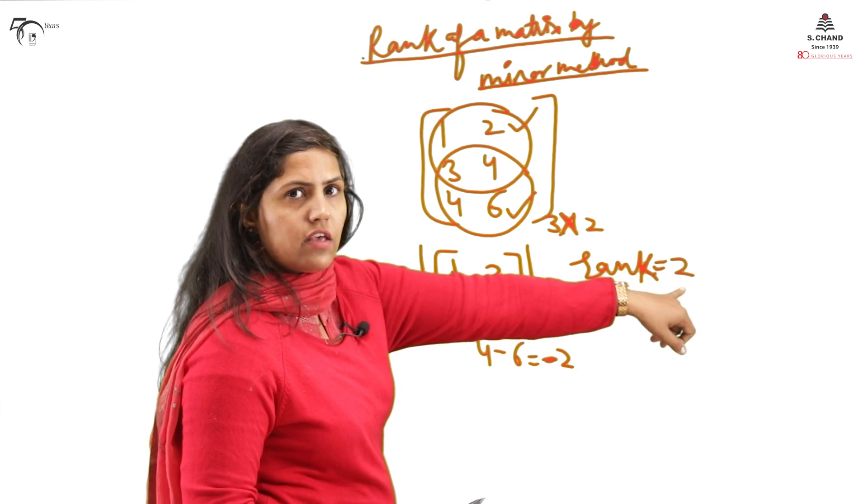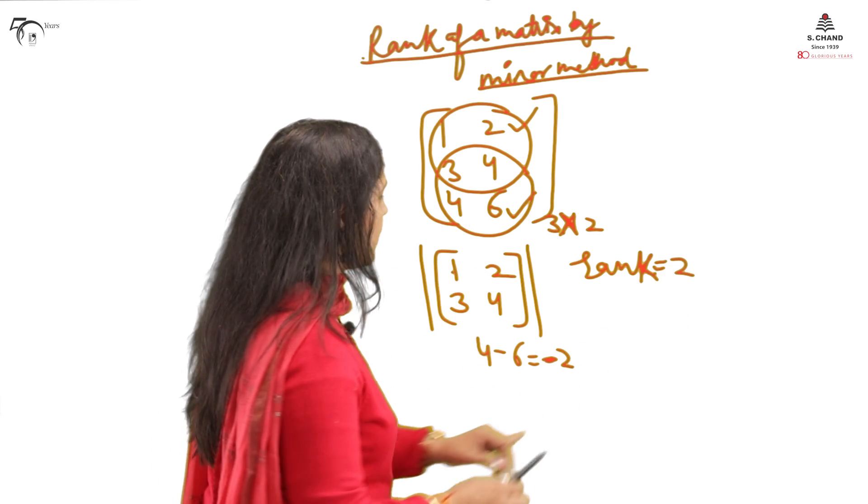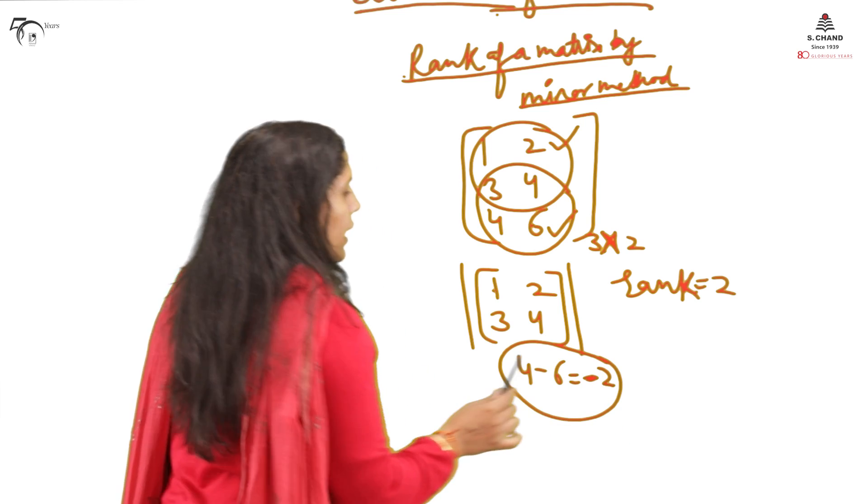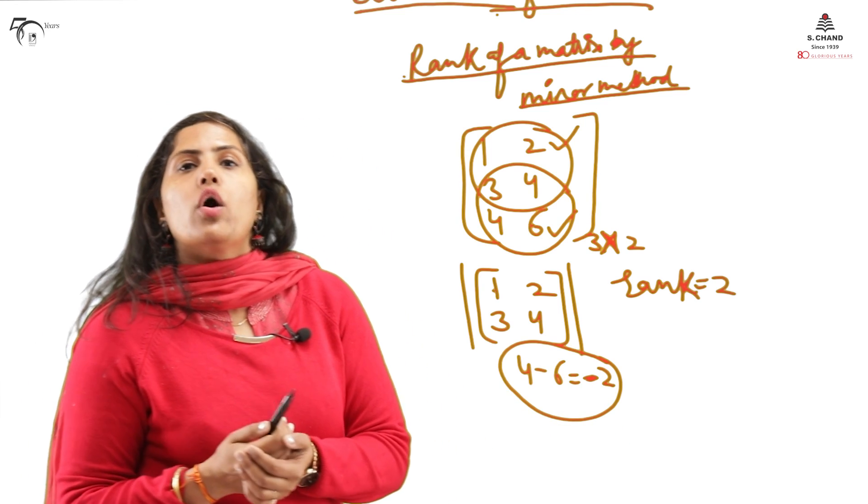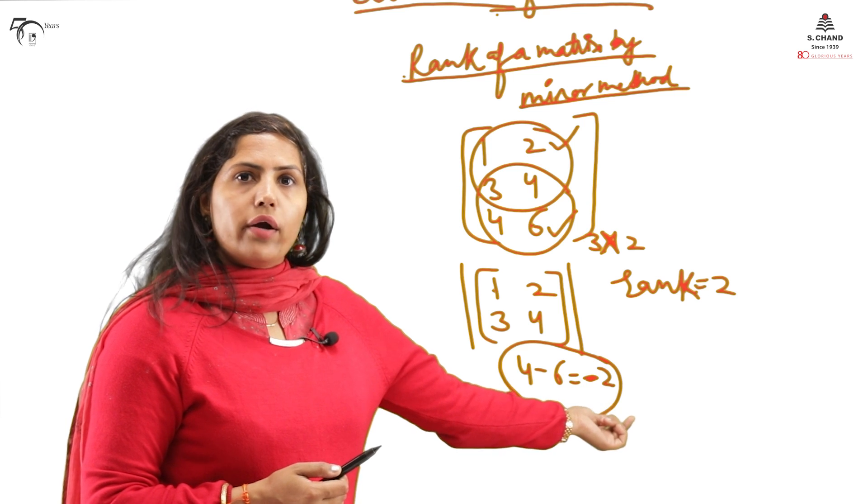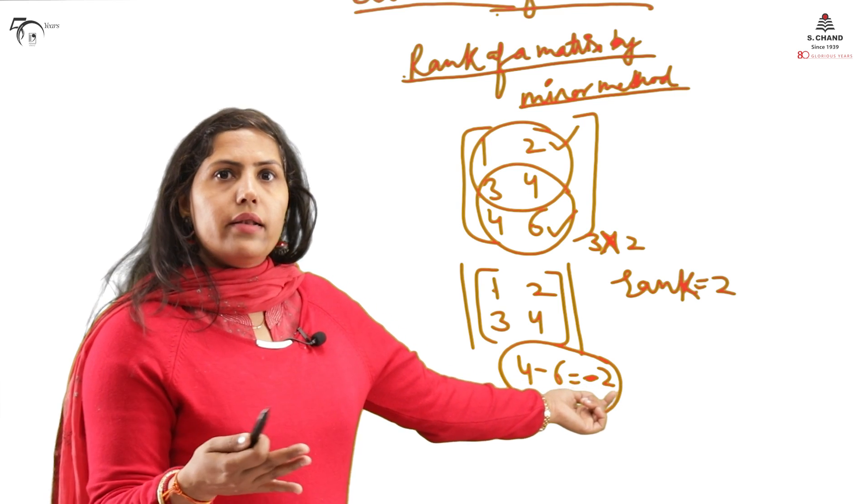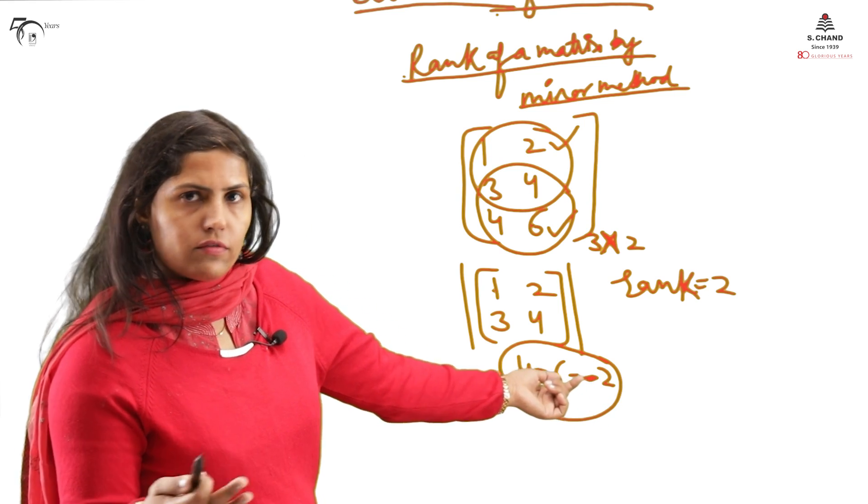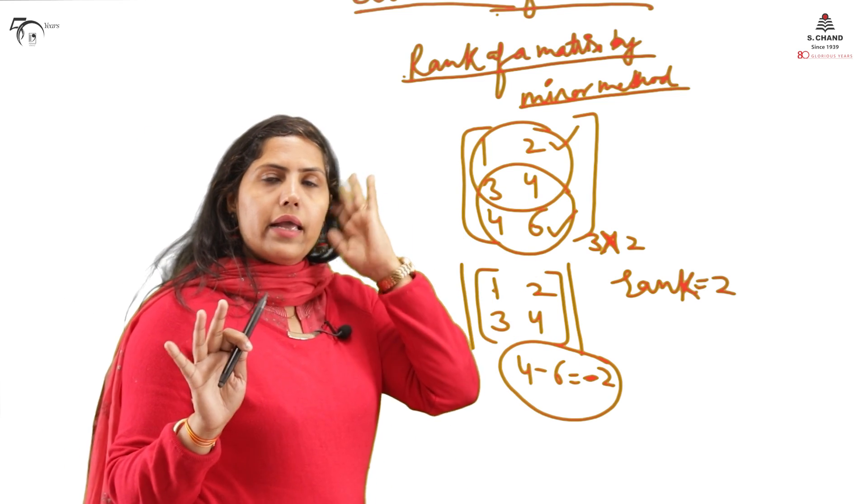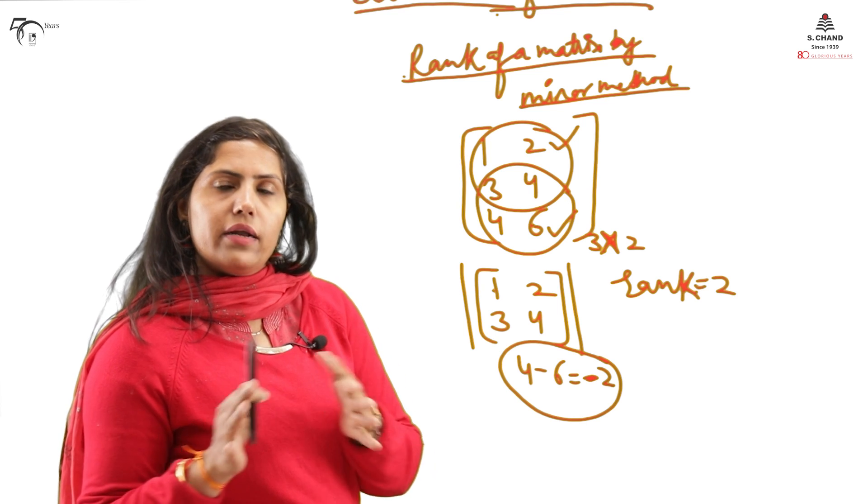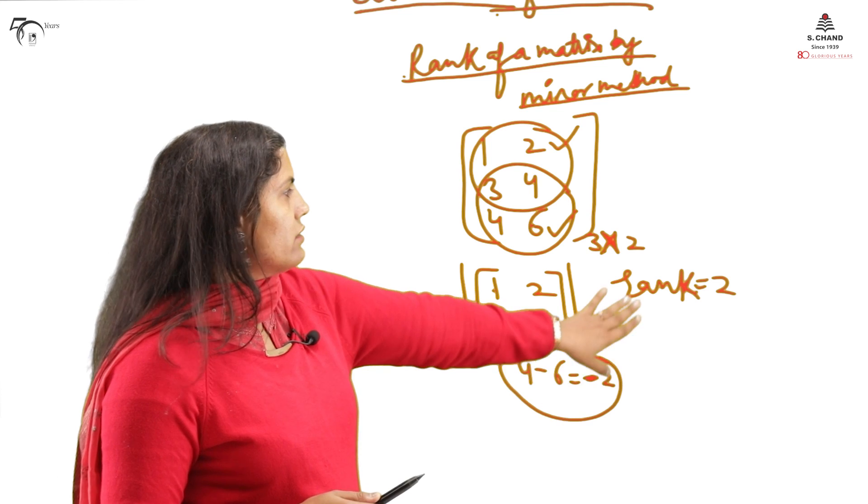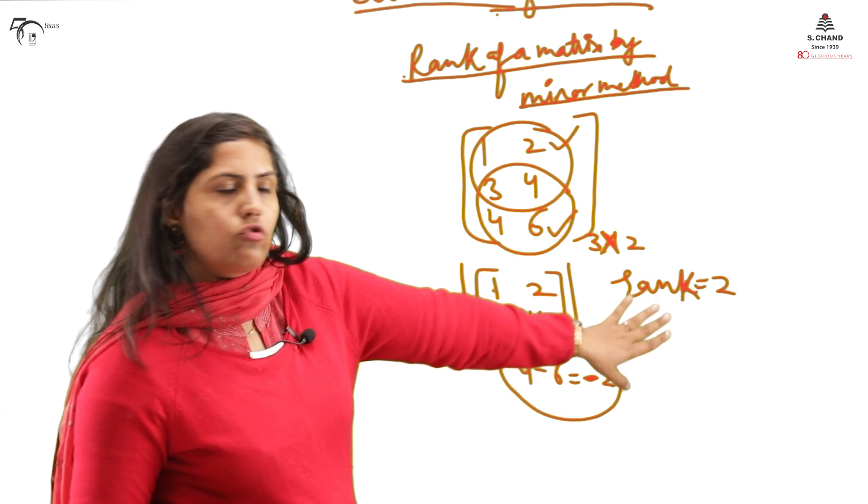If it is up to 2 by 2 order, you can find that in this case the rank of the given matrix is 2. And only we have to see at least one non-zero minor of this order. I am not calculating the rest 2 by 2 matrices. At least one non-zero minor I need and I have got it, and I can say rank is 2.